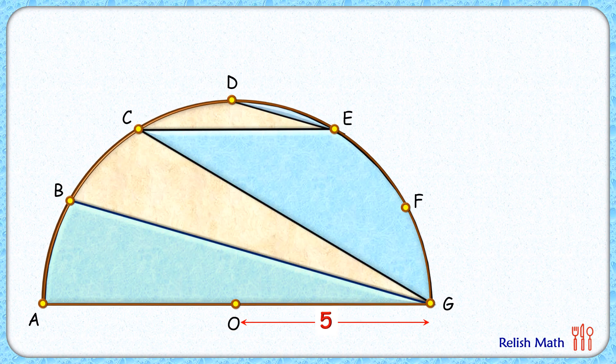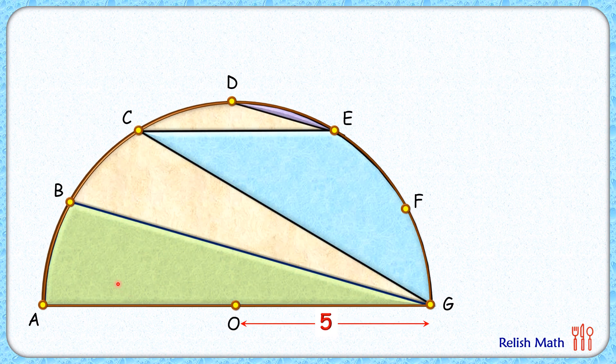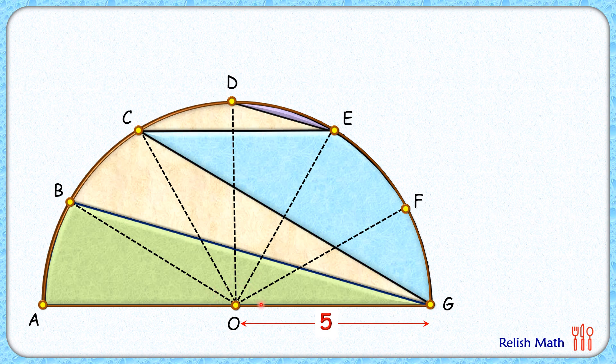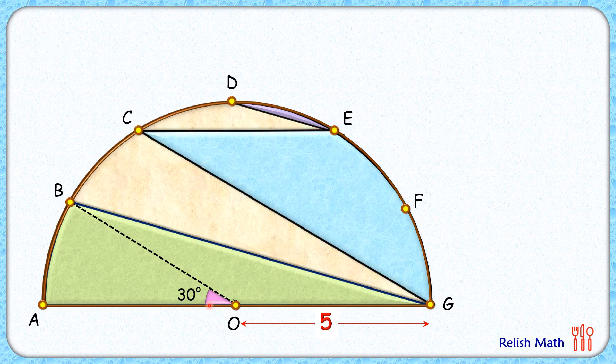Now, if we join all these points to the center, we'll find that this 180-degree angle at point O is getting divided into six equal parts, and thus this angle here is nothing but 30 degrees.